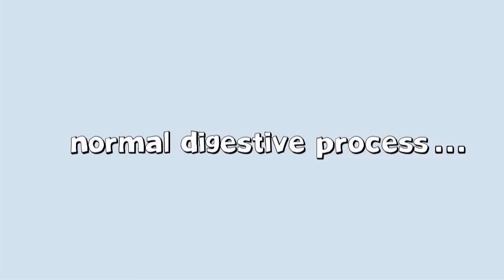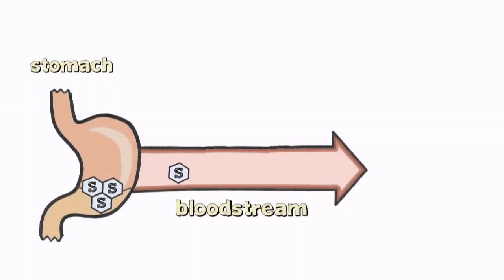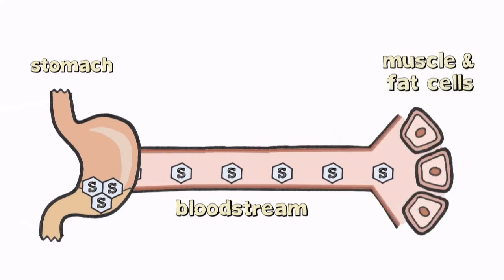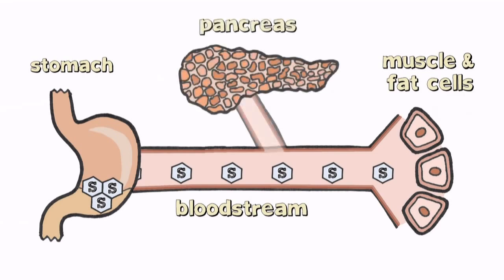In a normal digestive process, sugar travels from the stomach, through the bloodstream, to your body's muscle and fat cells. However, sugar can't enter these cells without the help of a special hormone called insulin, which is produced by the pancreas.